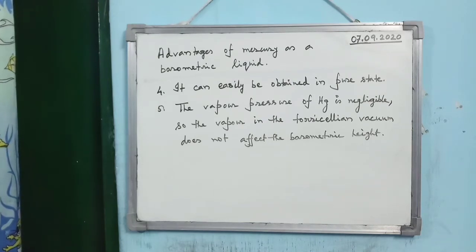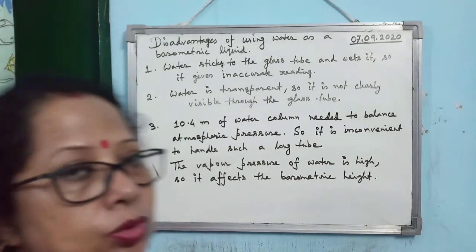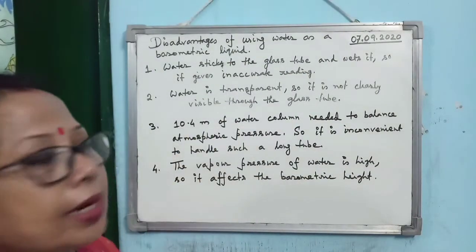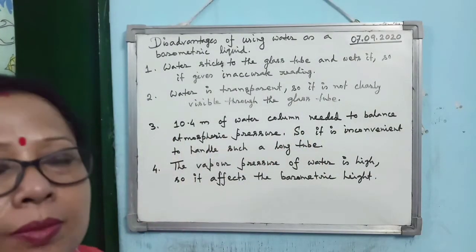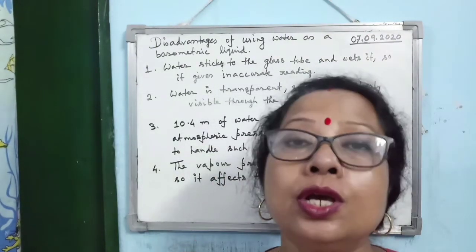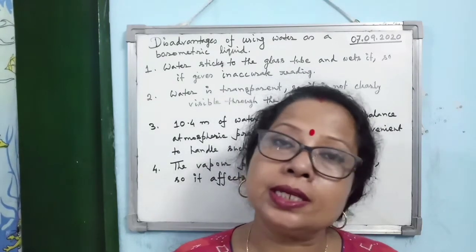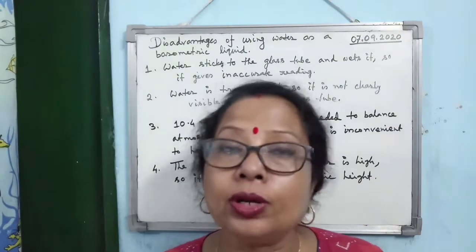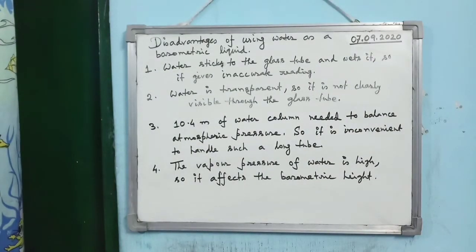The disadvantages of water as a barometric liquid are: water sticks to and wets the glass tube, giving inaccurate readings. Water is transparent so it is not clearly visible through the glass tube. A 10.4 m water column is needed to balance normal atmospheric pressure, making the tube inconveniently long. Also, water's vapour pressure is quite high, which may affect the barometric height.